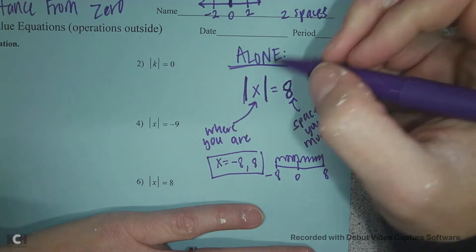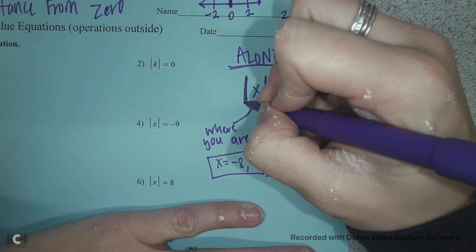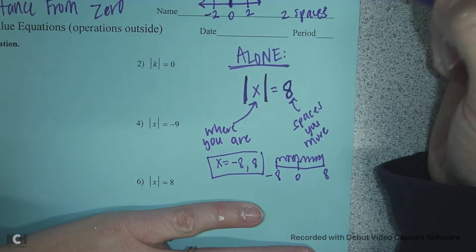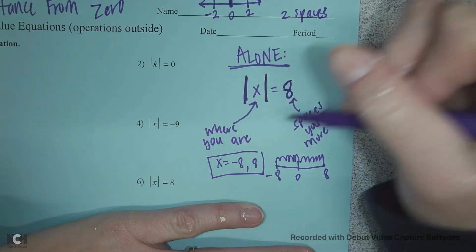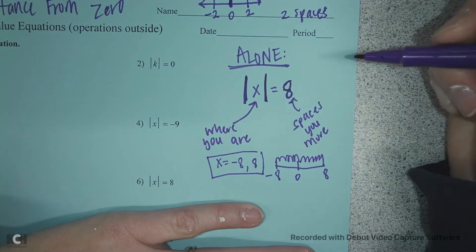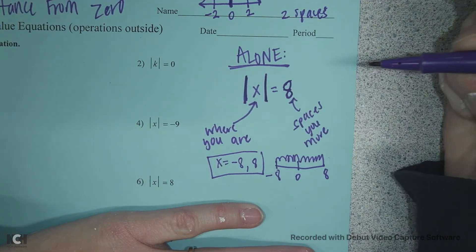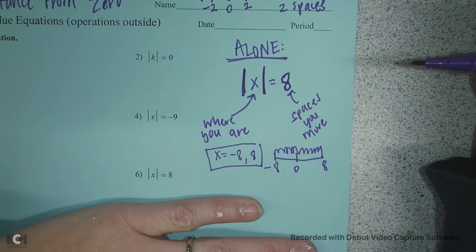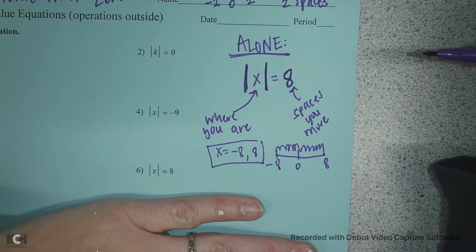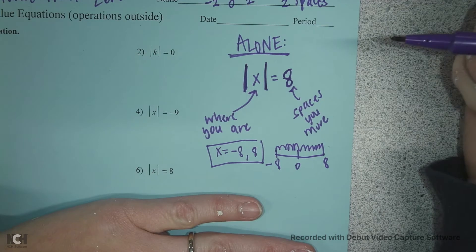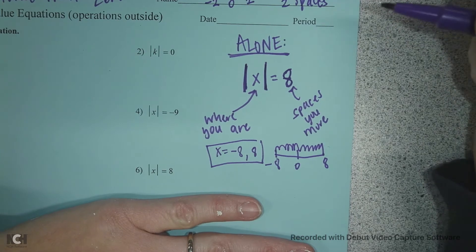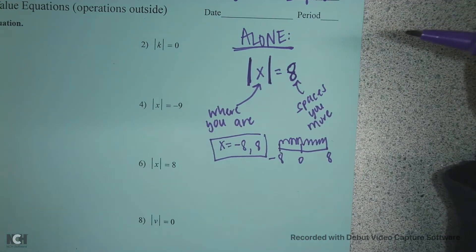So, an absolute value equation — you have two really tall lines, so you need two answers. Sometimes the answers are really similar; they're just different by sign, and sometimes they're very, very different. So we have to be really careful.